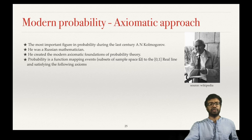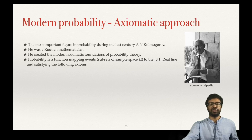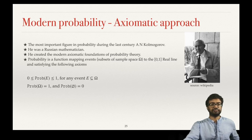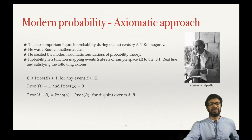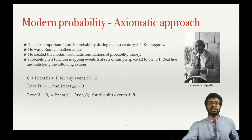According to Kolmogorov, probability is a function mapping events from a sample space to the real interval [0, 1]. The axioms state: the probability of any event is between 0 and 1; the probability of the entire sample space is 1; the probability of the empty set is 0; and if A and B are disjoint, then the probability of A union B equals the probability of A plus the probability of B.